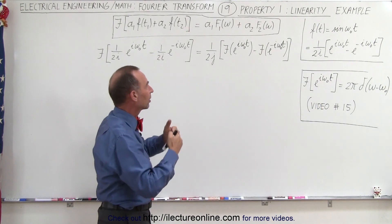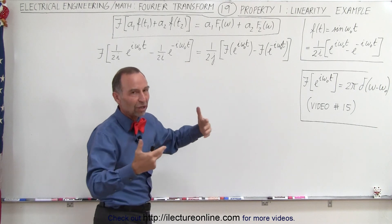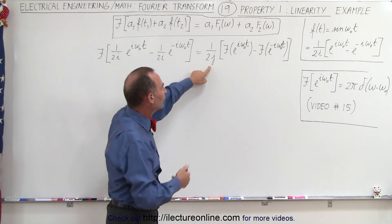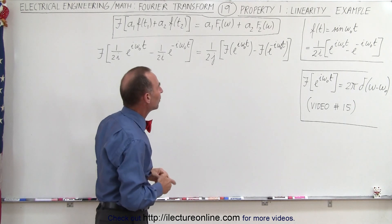We can factor out the constant, which we'll call 1 over 2j. i and j are essentially the same, except we tend to use j when we're in the frequency domain and i when we're in the time domain.